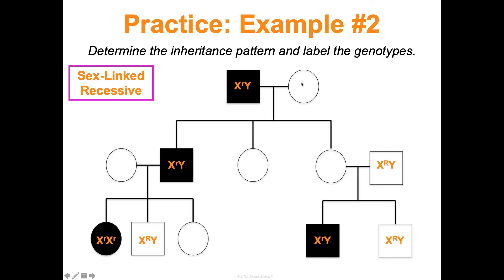Working through the girls: one mother must be a carrier because her son is affected — sons get their Y from dad and their affected X from mom, so she is X^R X^r. An affected daughter must have received an affected X from both parents, confirming her dad is affected and mom is a carrier. Any unaffected daughter whose father is affected automatically receives his affected X, making her a carrier as well.